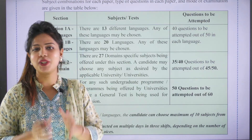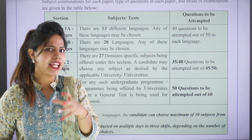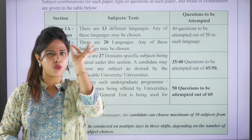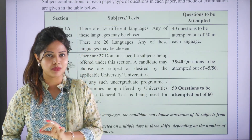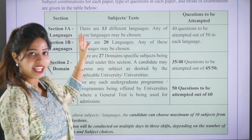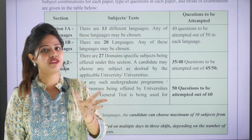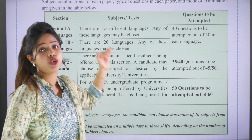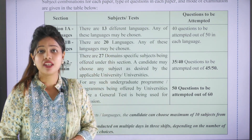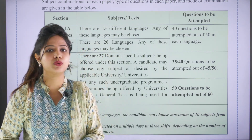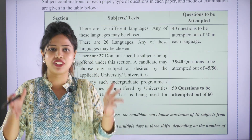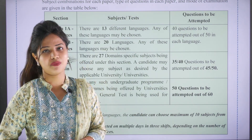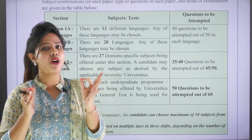Now let's look at the exam pattern for the CUET UG. It consists of three sections. Section 1 has Section 1A and Section 1B — in Section 1A, candidates can choose from 13 different languages; in Section 1B, there are about 20 languages. Section 2 has about 27 domain-specific subjects, from which candidates choose according to their stream. Finally, there is the General Test.